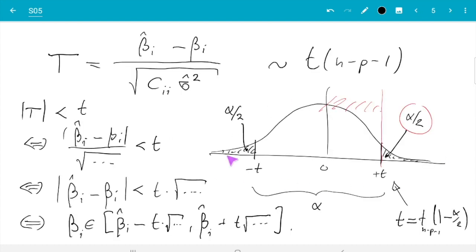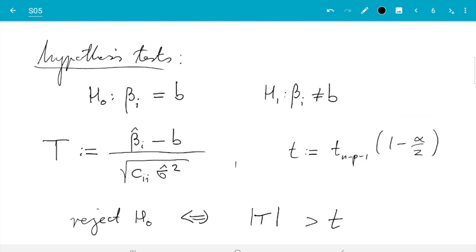But that's what we have just done in this picture. We have actually chosen the critical value t so that the probability of being larger is alpha. Alpha over 2 here, alpha over 2 there. So I write a formal proof in the notes, but the proof really comes down to look at this picture. And that's what we need for hypothesis tests. So that's that part done.